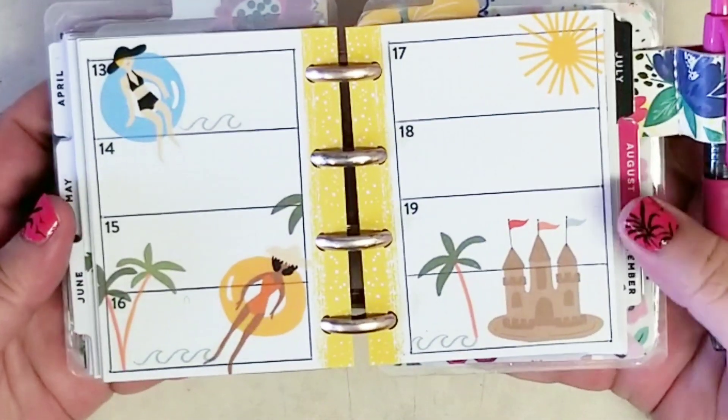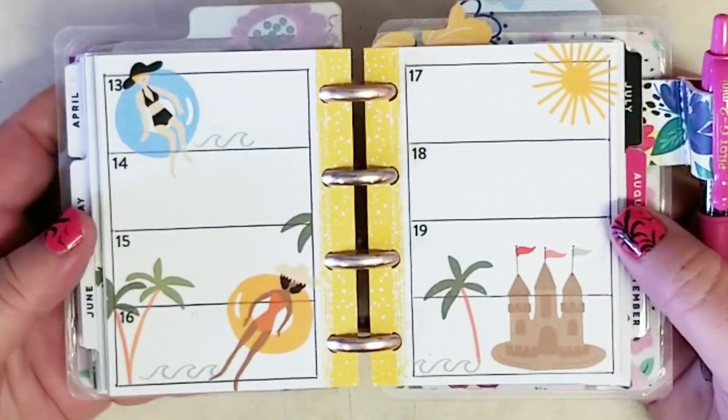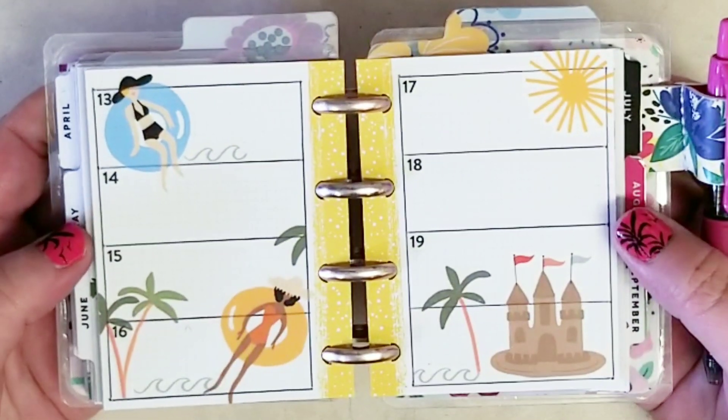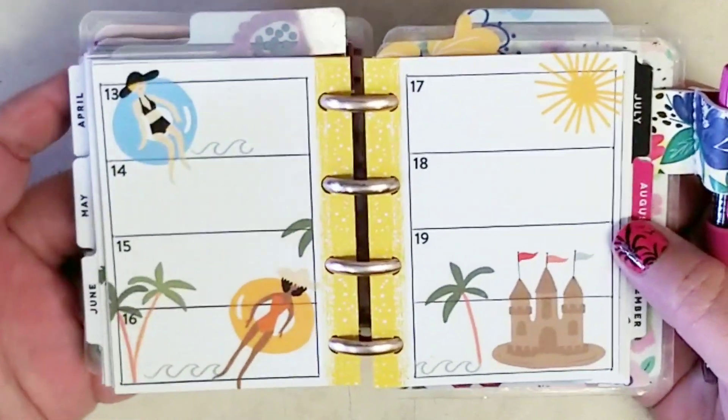And then let's pop these back in and give you guys a closeup. It was real easy. I think it's five, seven stickers. So not difficult at all to decorate your micro planner. It's so fun. I think it's so cute.